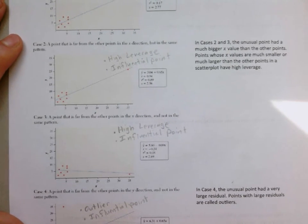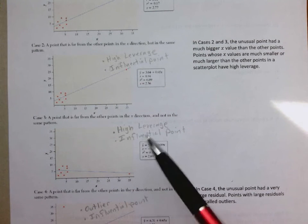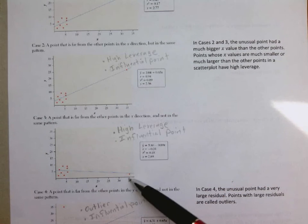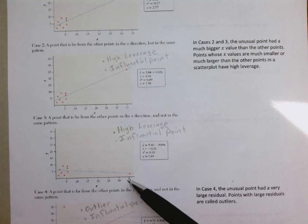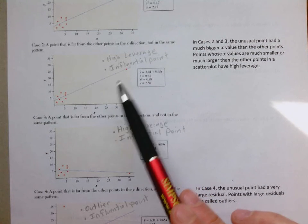Case 3 also has a much bigger x. The difference is that instead of being up high like in Case 2, this one's much lower. So it doesn't follow the trend of the data. Case 2 kind of follows that trend generally speaking, but Case 3 doesn't quite as much.